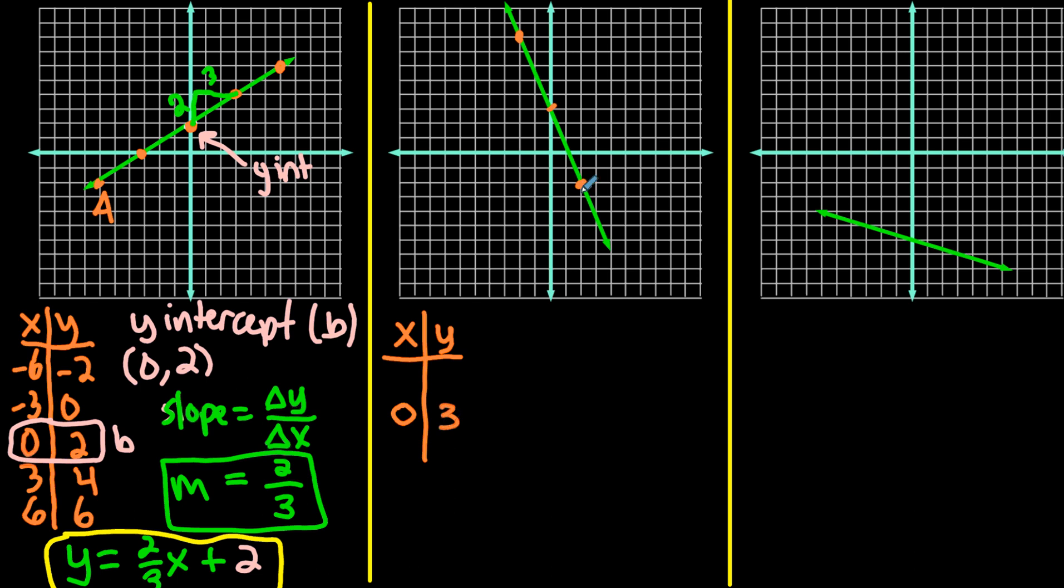This next point on the right down here will be over 2, down 2. Over 2, down 2. And then the other point is back 2, up 2, 4, 6, 8. Back 2, up 8. So we've got our table of values. And then as far as finding the y-intercept, that is right here. That's our b value. So our b in this case is 3, or 0, 3.